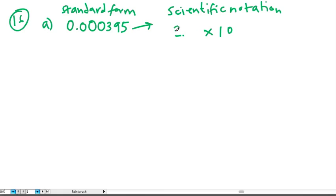In order to change this small number 0.000395 to a number between 1 and 10, we would basically take 3.95. So we would effectively move this point and put it right there: 3.95 times 10 to some power.